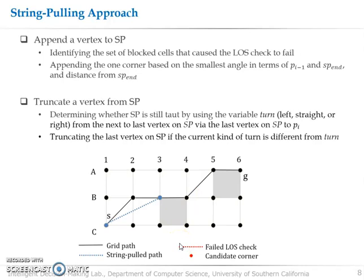In the later iteration, the current kind of turn at this moment is of C1, B3, A5, which is straight, which is different with the one stored in the variable turn. So we remove the last vertex, B3, from SP.